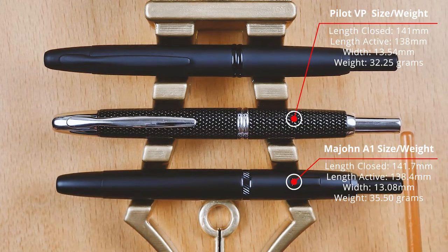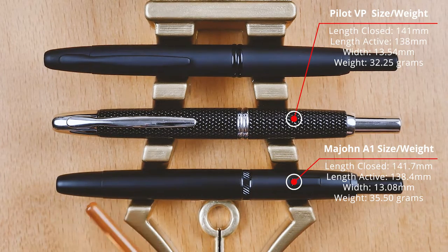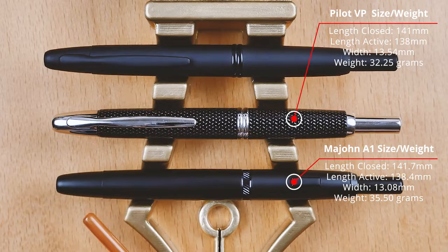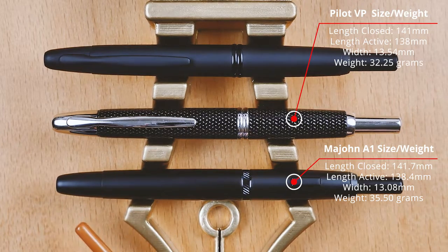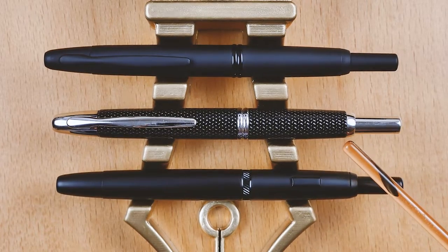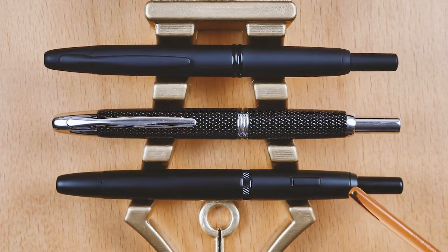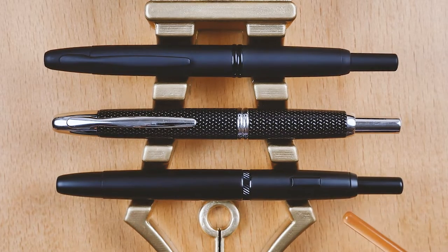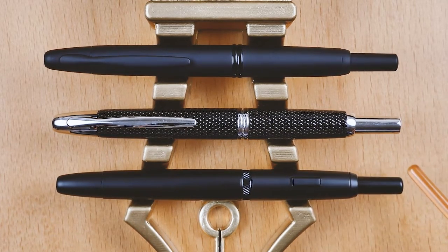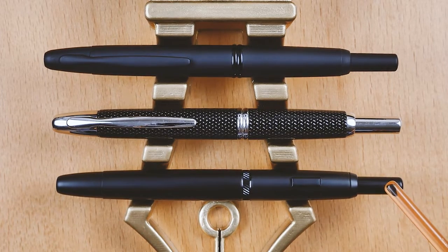Overall length is pretty much on par with the Pilot. Shape of the nose cones, even with the little subtle step down, same as the Pilot. On the back end, we see some subtle differences. The Pilot is a bit more rounded. The Mahjong is a bit more angular and has a little groove on the end. The back knock or clicker itself, same length, pretty much same diameter.